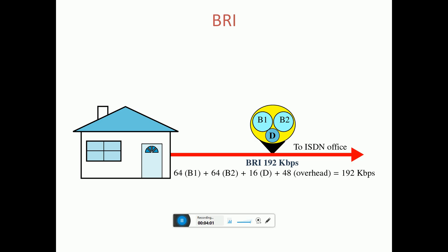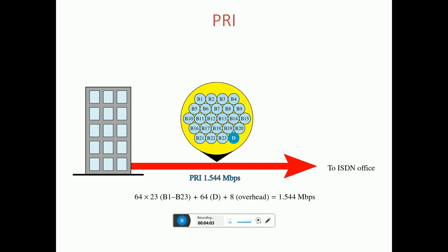The data transfer rate is 192 Kbps per second. The Primary Rate Interface (PRI) for ISDN offices is 1.54 Mbps per second.